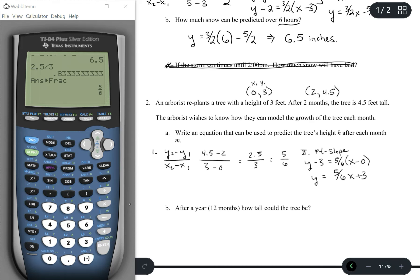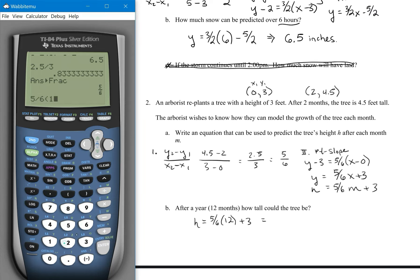Y represents our height and x represents the months. So really, 5 sixths m plus 3. So after a year, which is 12 months, how tall could the tree be? Well, h is equal to 5 sixths times 12 plus 3. And that is equal to 13 feet.